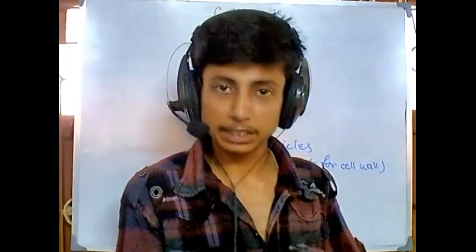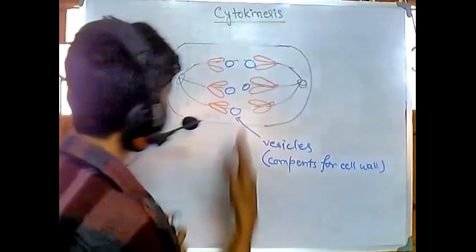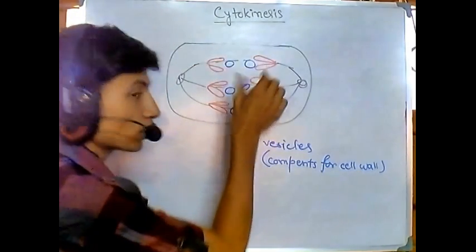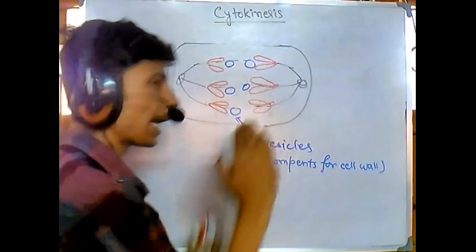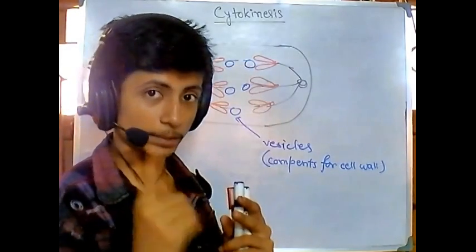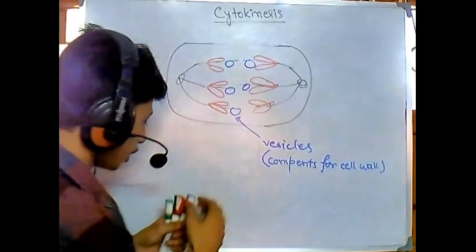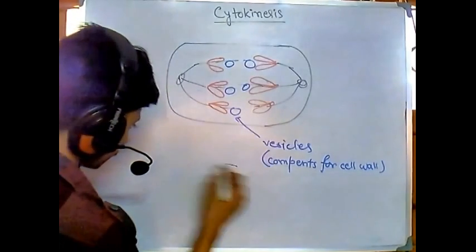Once it is coming to the last phase, this vesicle starts to fuse. When these vesicles fuse together, because these vesicles have components of making the wall, they start to make something here.